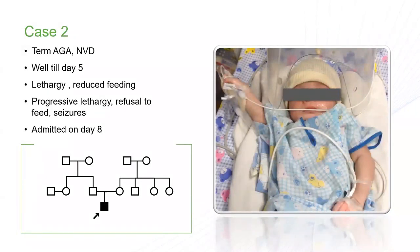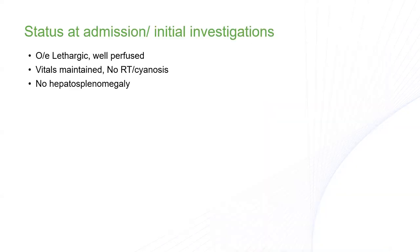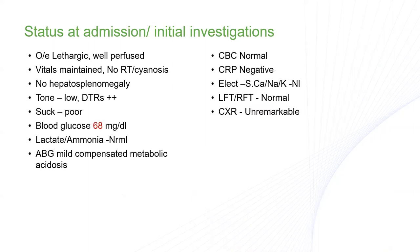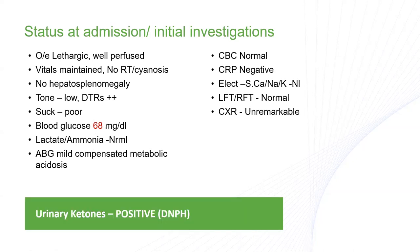Case two: a healthy term AGA baby born in our hospital, well until five days of age, when parents noted poor feeding and progressive lethargy. By day eight, he was also having seizures. Nothing in the family history — single, first baby, non-consanguineous. On admission, the baby was well perfused but very lethargic with maintained vitals and no organomegaly. In the CNS, suck was poor and there was hypotonia with brisk reflexes — a very important sign. Glucose, lactate, ammonia, and blood gas were not much abnormal, except the ketones, which were positive by a simple DNPH chemical test performable in five minutes at the bedside.